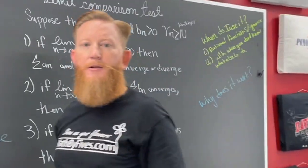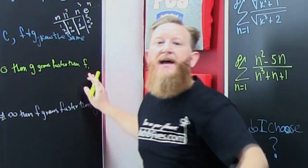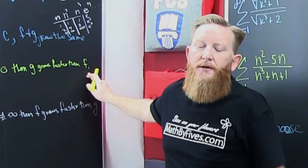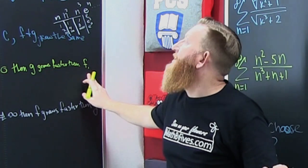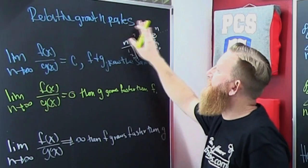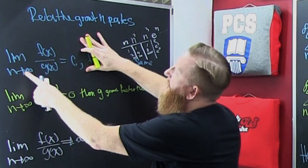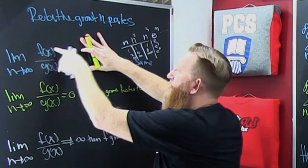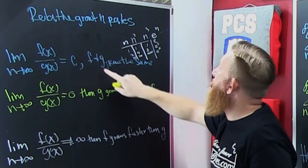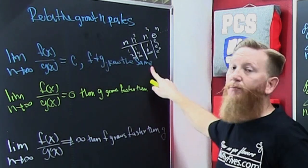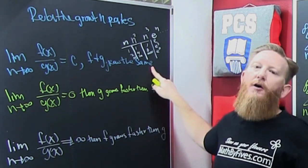Well, follow me — here's why it works. It works off that section you went through a while ago, probably when you were doing limits. We're talking about relative growth rates. You're comparing two functions: if you run the limit of the quotient of two sequences and it goes to some number, then they are both growing at the same rate — and we're talking about large n's.